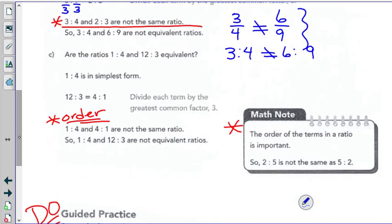Order does count. And there's this math note that you want to read over. Because 1 to 4 and 12 to 3, oh, you're thinking, oh, 3 goes into 12 four times. That might be the same. But no, 12 to 3, order counts, is a 4 to 1 ratio. So 1 to 4 and 4 to 1, they are reverse of each other. They are not the same ratio.